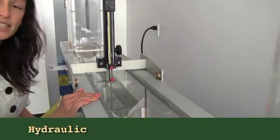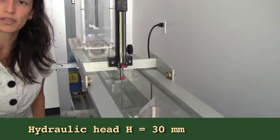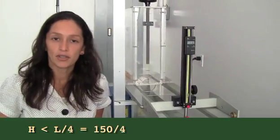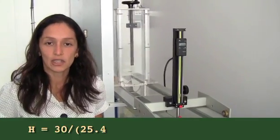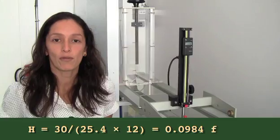The hydraulic head is 30 millimeters, which is less than one-fourth of 150 millimeters. In U.S. customary units, the hydraulic head is 0.0984 feet.